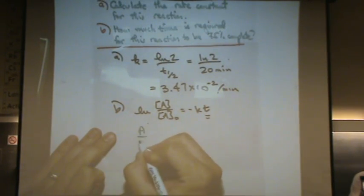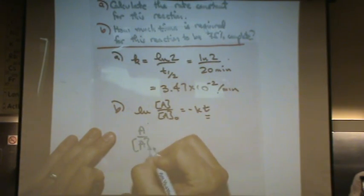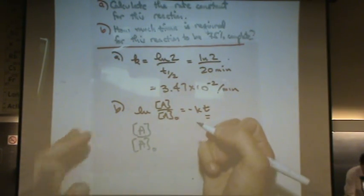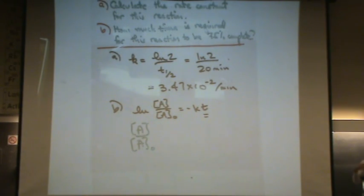A over A naught, that's the tricky part of this. Okay, it's 75% complete. However, this ratio represents what's left over. Let me tell you why.